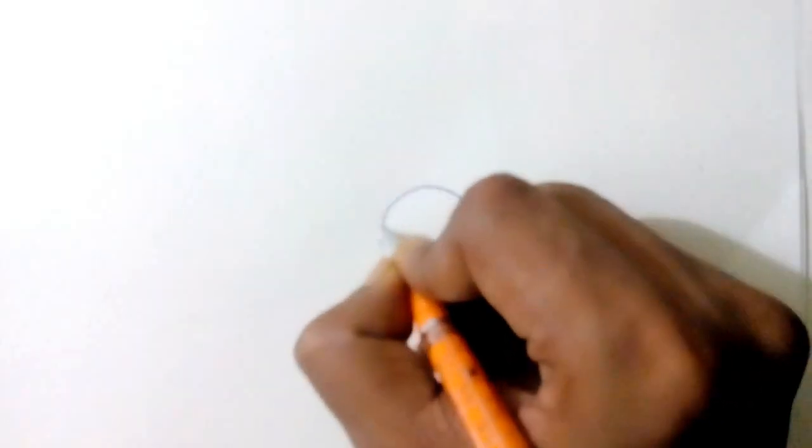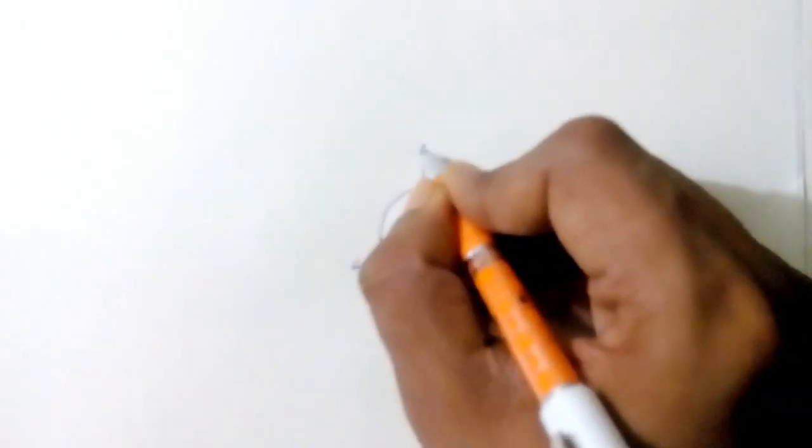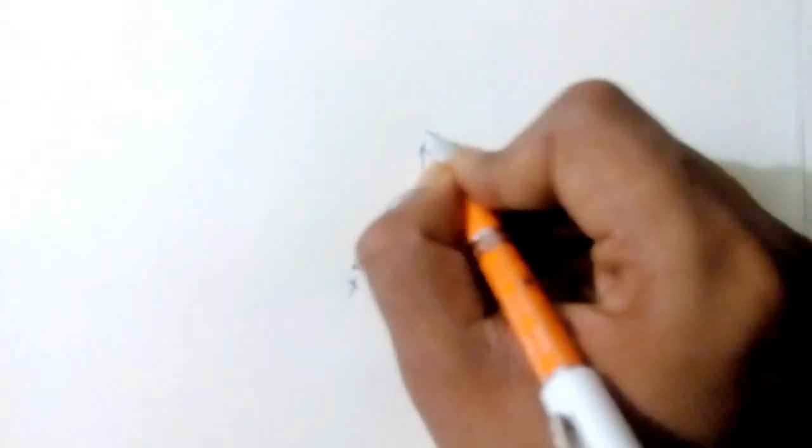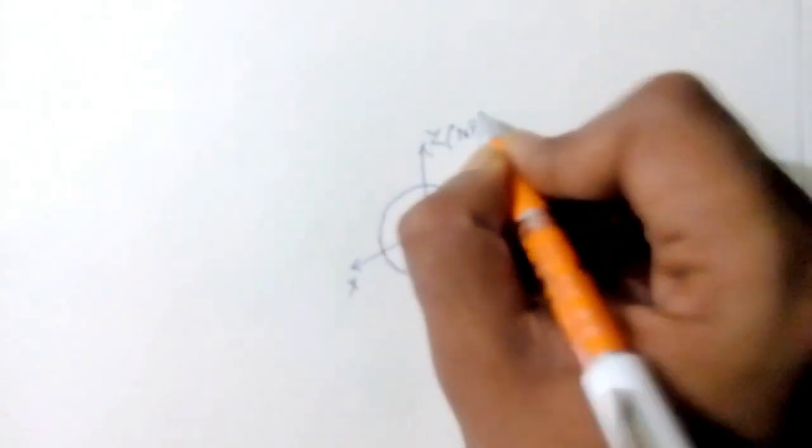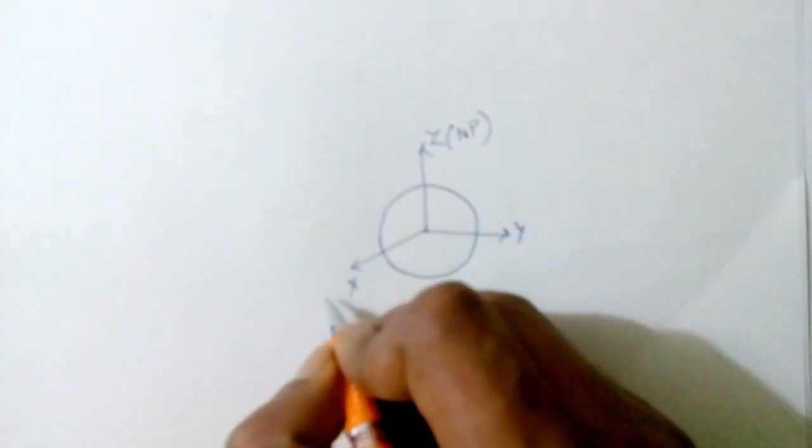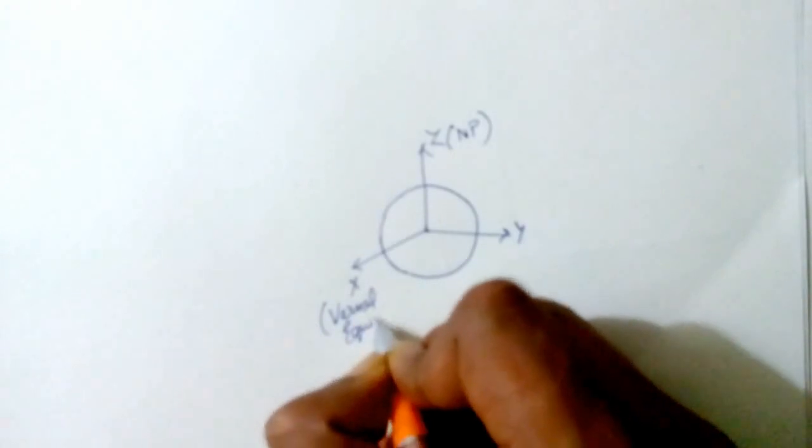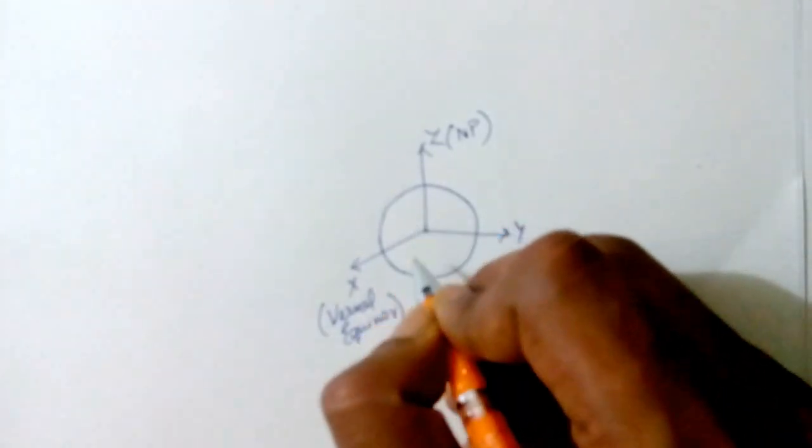So let's talk about the Earth Centered Inertial frame, or the ECI frame. Now this frame has its origin at the center of the Earth and it has three mutually perpendicular axes: the x-axis, the y-axis, and the z-axis. The z-axis points towards the geographical North Pole, the x-axis points towards the vernal equinox, and the y-axis completes the right-hand coordinate system.